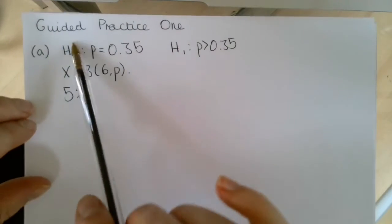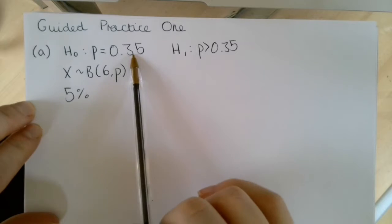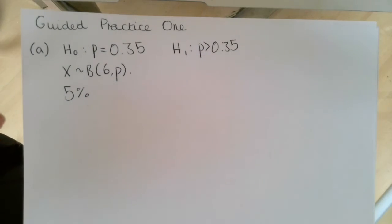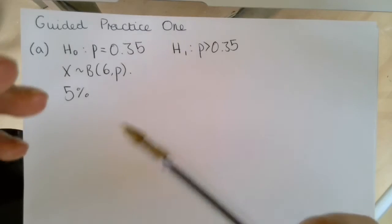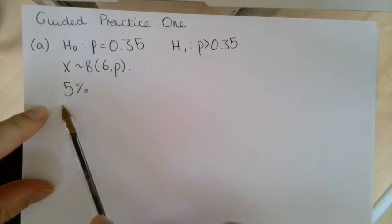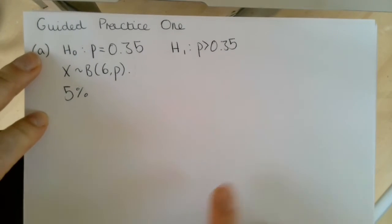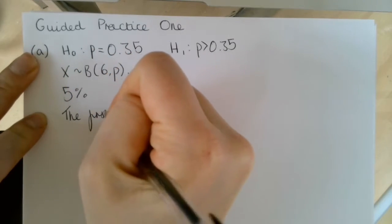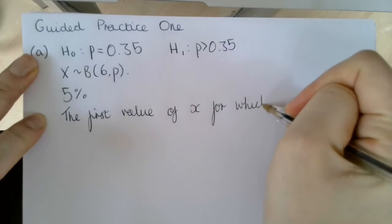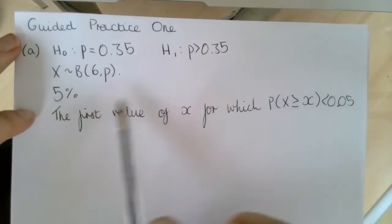What this means is, if we want to accept that H0 is true — so if the parameter is equal to 0.35 — then we need to find the probability that x is greater than or equal to a number, and we need to find that probability when it is less than 0.05, so less than our significance level. We want to use our binomial distribution tables to find the first value of x for which the probability that x is greater than or equal to that value is less than 0.05.